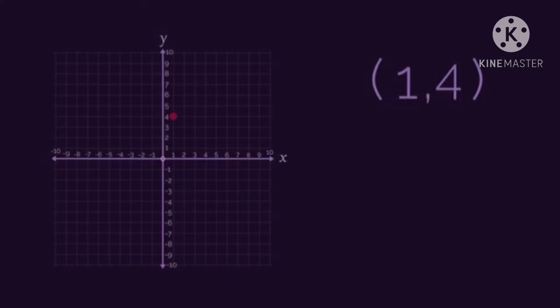It is one four, because it is one along from the origin, and four up. Where would negative four six go on the grid? Pause the video, have a think, and click play when you're ready to check.